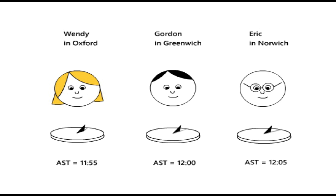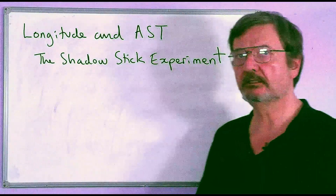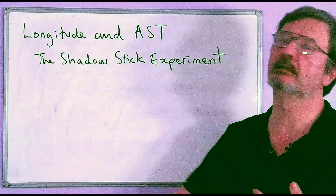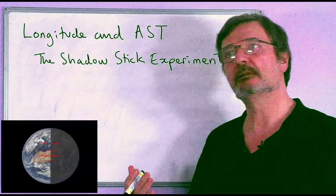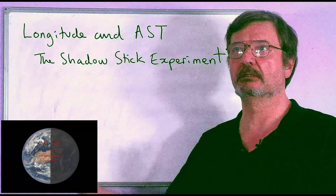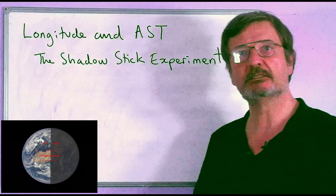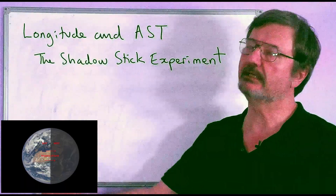Gordon, who lives in Greenwich, his sundial says it's 12 o'clock — so his apparent solar time is 12 o'clock. At exactly the same time, Eric's apparent solar time is about five past twelve, and Wendy's solar time in Oxford is about 11:55. So clearly your apparent solar time depends on your longitude. The further east you are, the Sun rises sooner, because the Sun rises in the east and sets in the west. Japan is called the land of the rising Sun and it's in the far east.